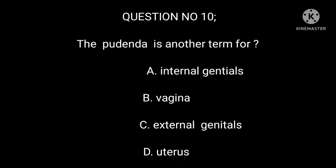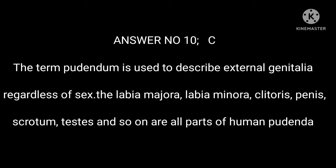Question number 10. The pudenda is another term for: A. Internal genitals. B. Vagina. C. External genitals. D. Uterus. Answer number 10: C. The term pudendum is used to describe external genitalia regardless of sex. The labia majora, labia minora, clitoris, penis, scrotum, testes, and so on are all parts of human pudenda.